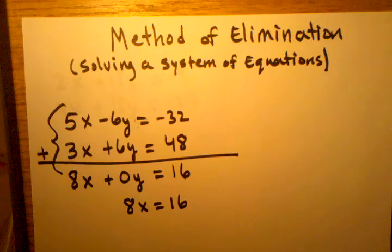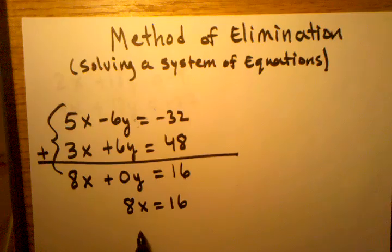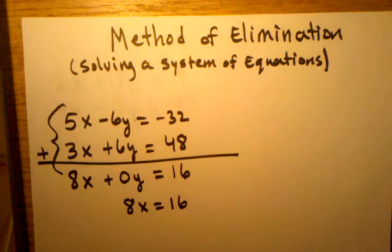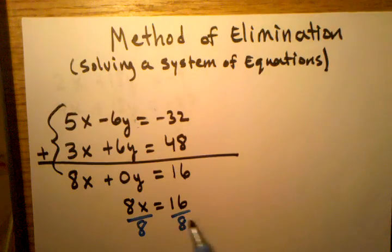And now that I have, I can go ahead and continue solving for x and at least find out what that variable is. So if I do that, I would divide both sides by 8. And that would get me, these would cancel out, and that would get me x equals 2.